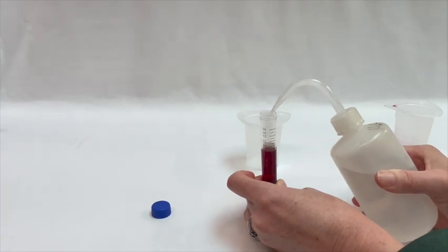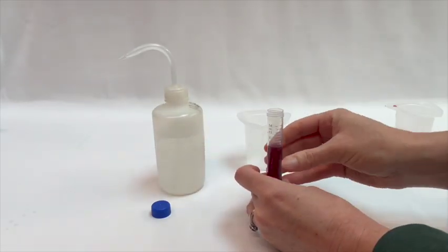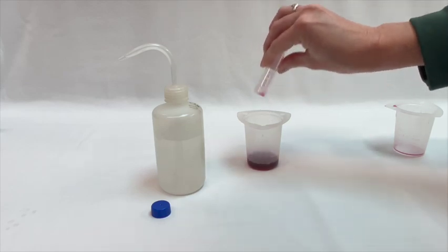You can then pour your sample back into the beaker if you want, or simply cap the conical tube and leave it in the conical tube. This is totally up to you. Here, I will pour the sample back into the beaker.